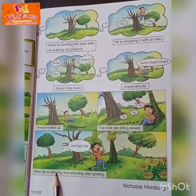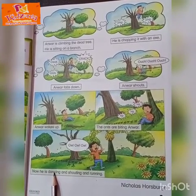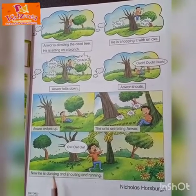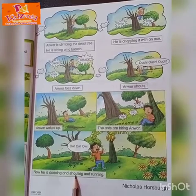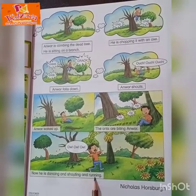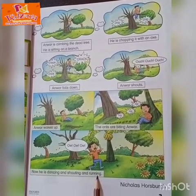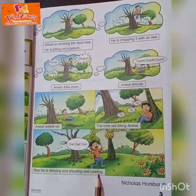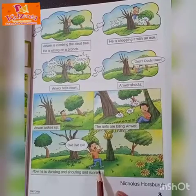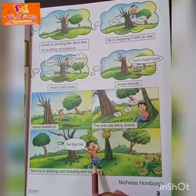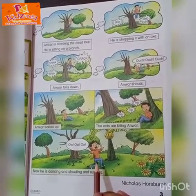Now he is dancing, and shouting, and running. اب وو ڈانس کر رہا ہے، اور چلا رہا ہے، اور بھاگ رہا ہے۔ I hope you can understand this story. Thank you.